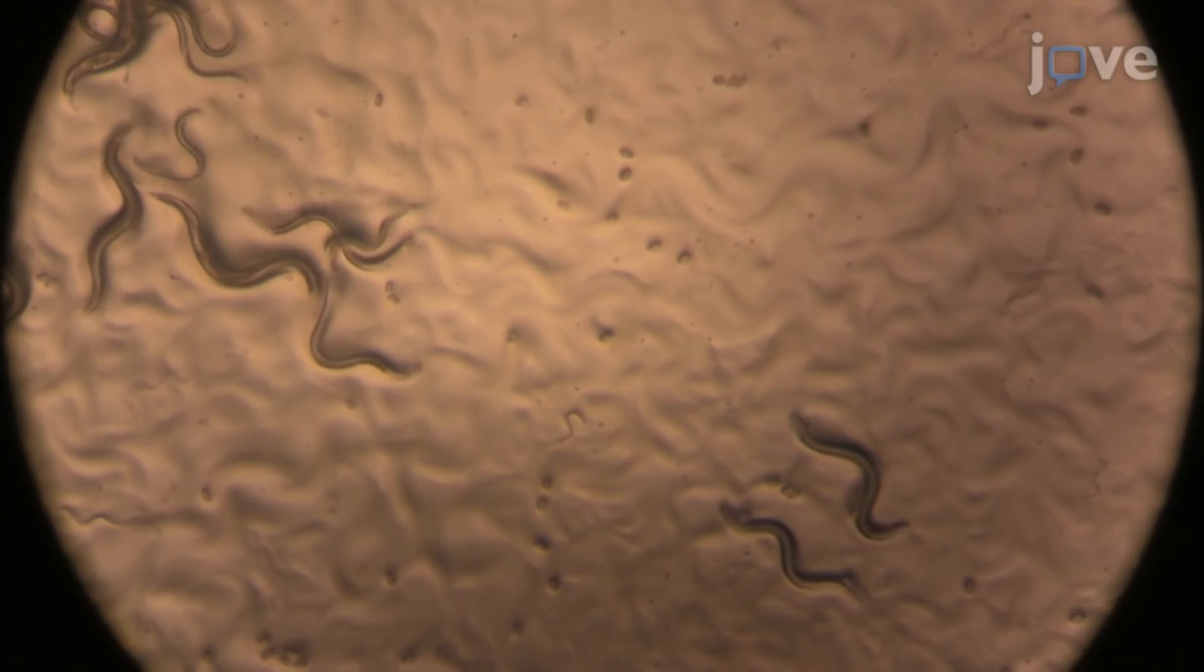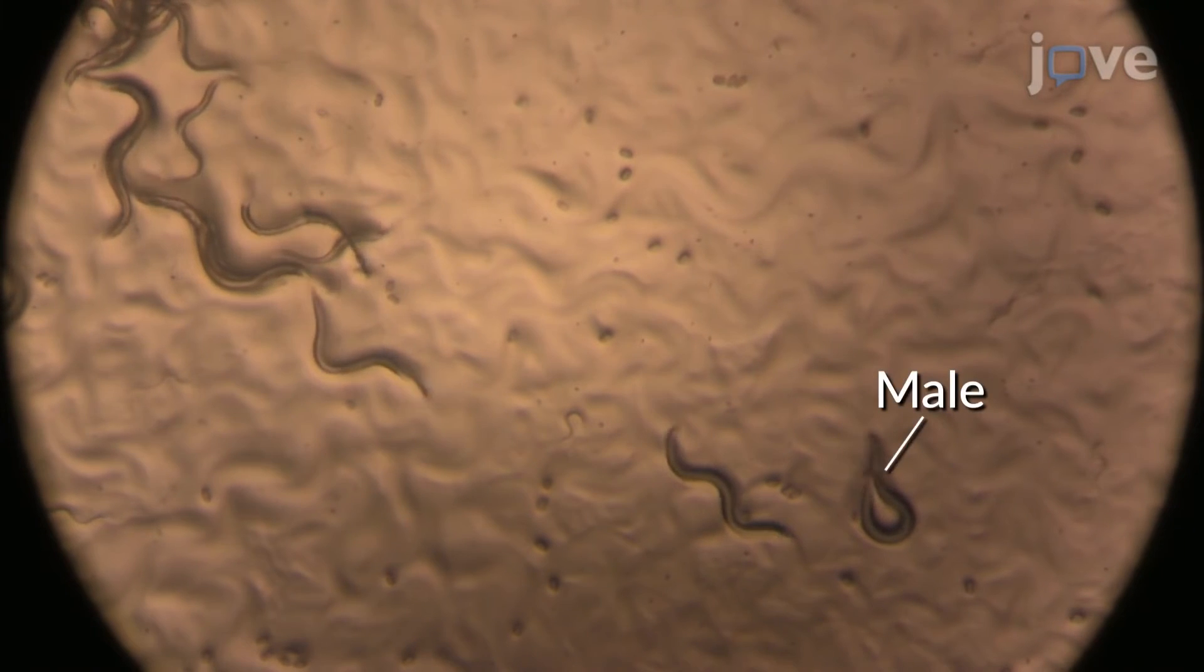Under a microscope, on a plate containing 1 to 3 day old adult C. elegans, identify the males by their fan-shaped tail.